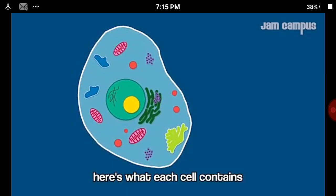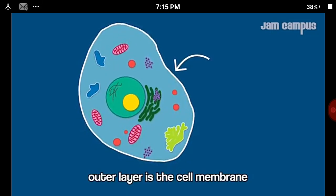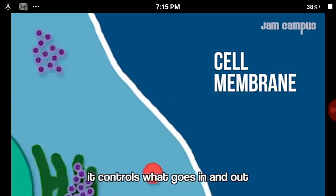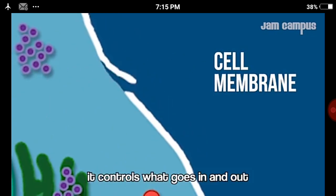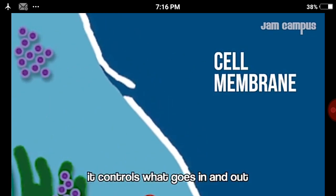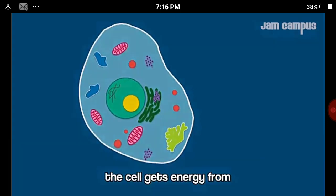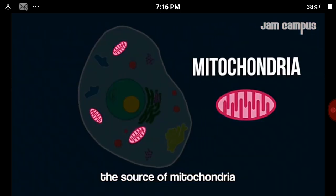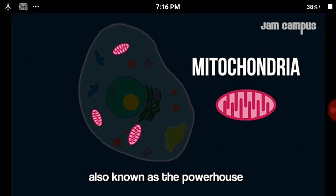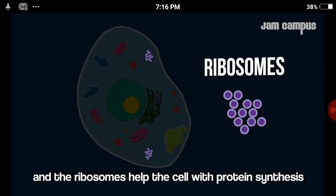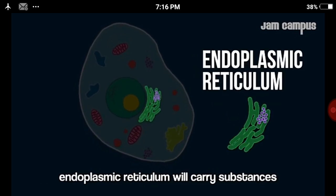Here's what a cell contains. The outer layer is a cell membrane — it controls what goes in and out. The cell gets energy from the mitochondria, also known as the powerhouse. Ribosomes assist the cell with protein synthesis, and the endoplasmic reticulum carries substances.